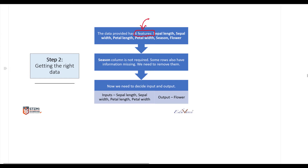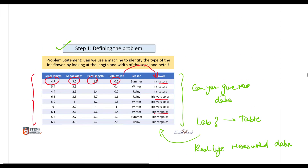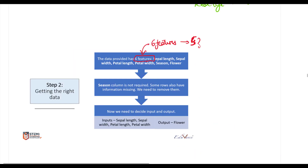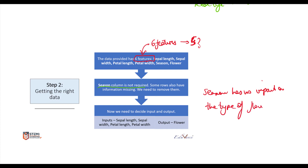Once we get the data from Jane, we see she has given us six features. You might say, 'John, you explained only five of them.' Let's go back and check: sepal length, sepal width, petal length, petal width, then season, and then flower type — yes, there are six. The season column is not required because season has no impact on the type of flower.